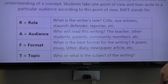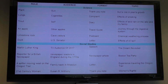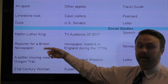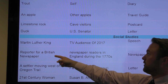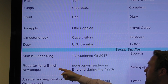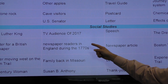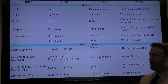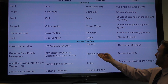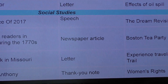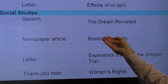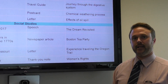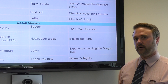Let's take a look at an example. In a civics class, students could take on the role of being a reporter for a British newspaper. They would write an article to the audience of newspaper readers in England during the 1770s. The topic is the Boston Tea Party. Having students respond to writing in this format allows them to consider varying perspectives.